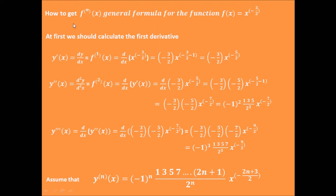In order to get the nth order derivative general formula, we should first carry out the first derivative on the function x to the power of minus 3 divided by 2. So the first derivative y' equals the derivative of x to the minus 3/2, which equals minus 3 divided by 2 times x to the power of minus 5 divided by 2.